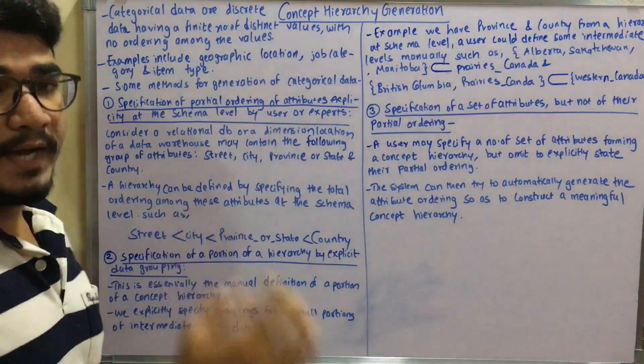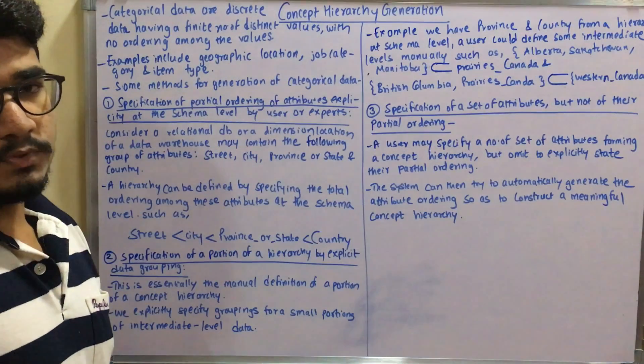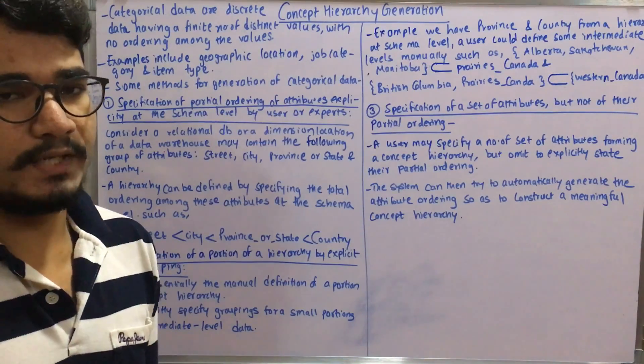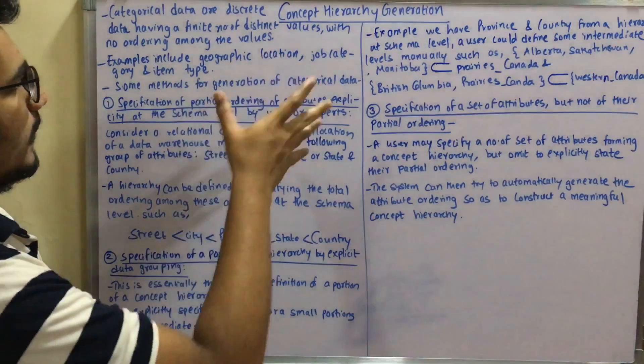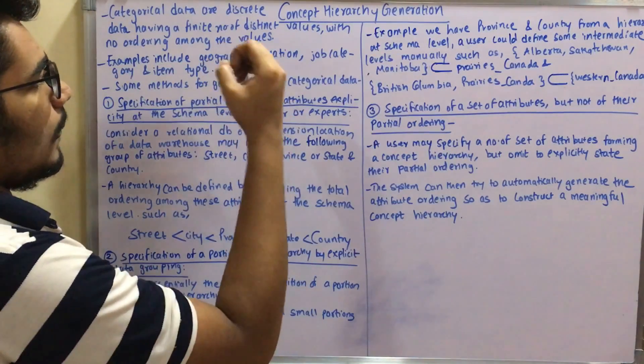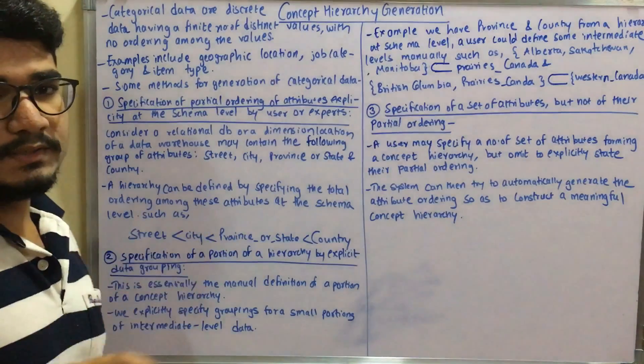The categorical data usually has discrete data with finite number of distinct values with no ordering among them - it's in a random fashion with no particular ascending or descending order. Examples include geographic locations, job categories, and item types.